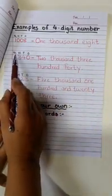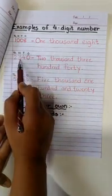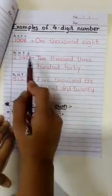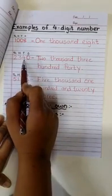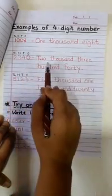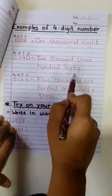In next number, under 1000 we have 2, so 2000. Under 100 we have 3, so we'll write 300. Under 10s we have 4, we'll write 40, and 0 under 1s. So 2340. Easy! Right?